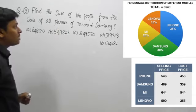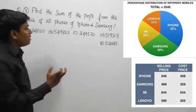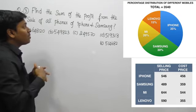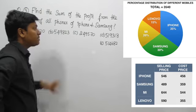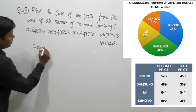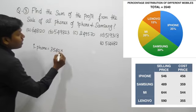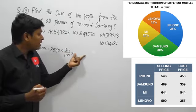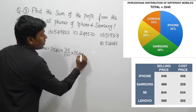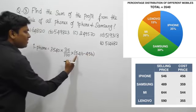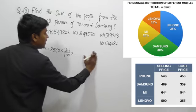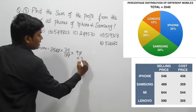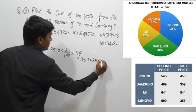Question number three: find the sum of the profit from the sale of all phones of iPhone and Samsung. We need to find profit for iPhone first. Out of 3540, iPhone is 35 percentage. The selling price of iPhone is 546 and cost price is 456. Selling price minus cost price: 546 − 456 = 90 profit per phone.